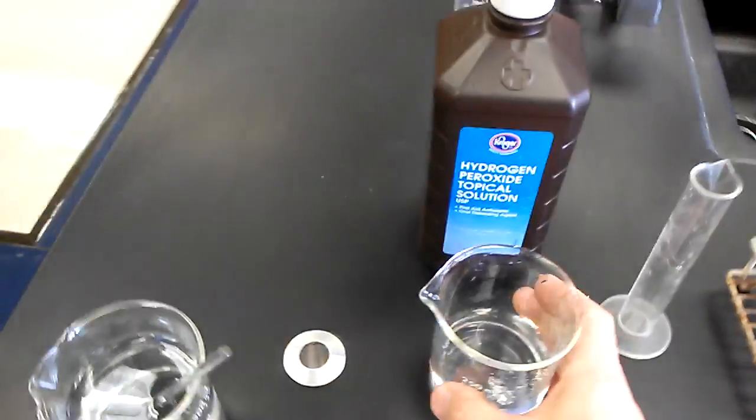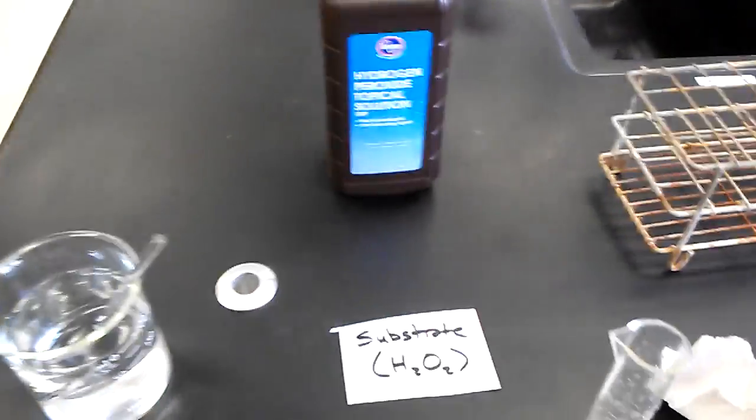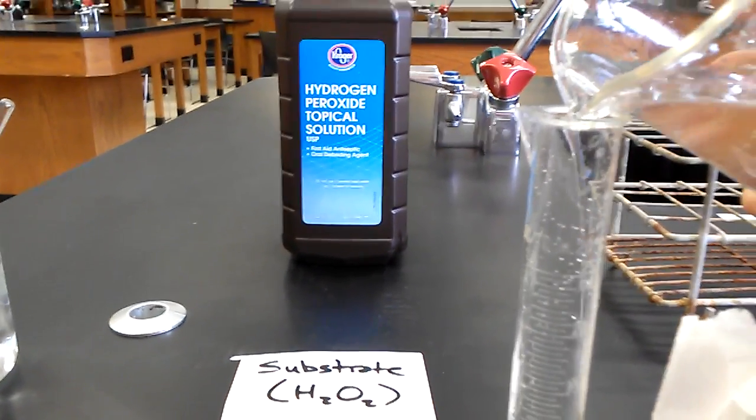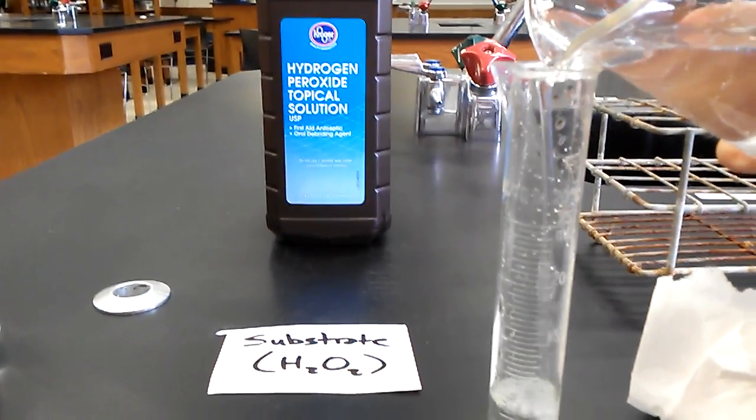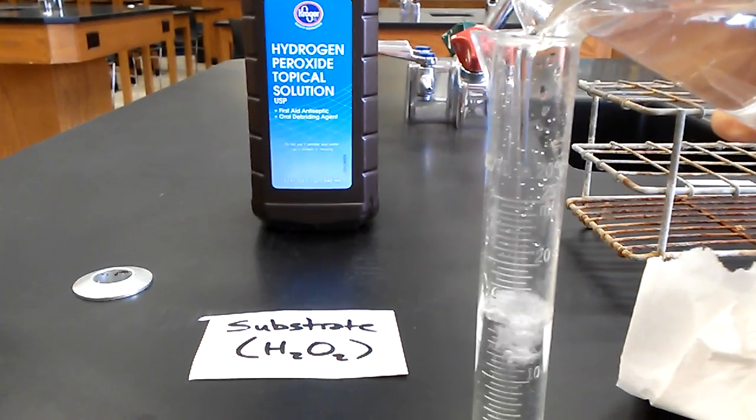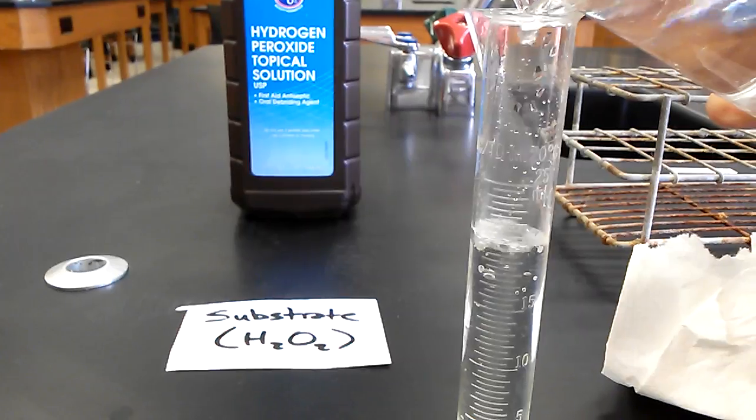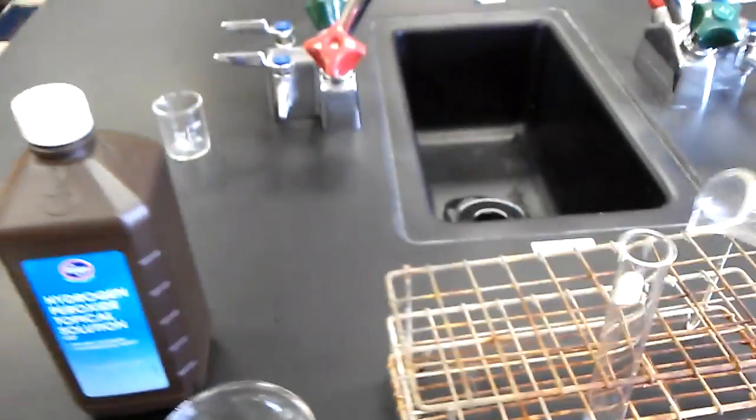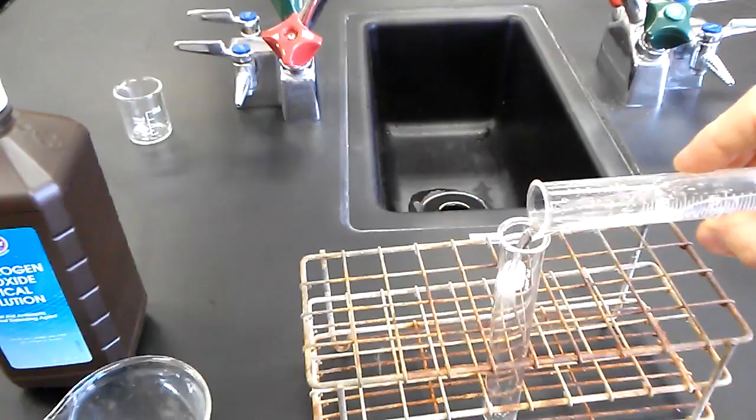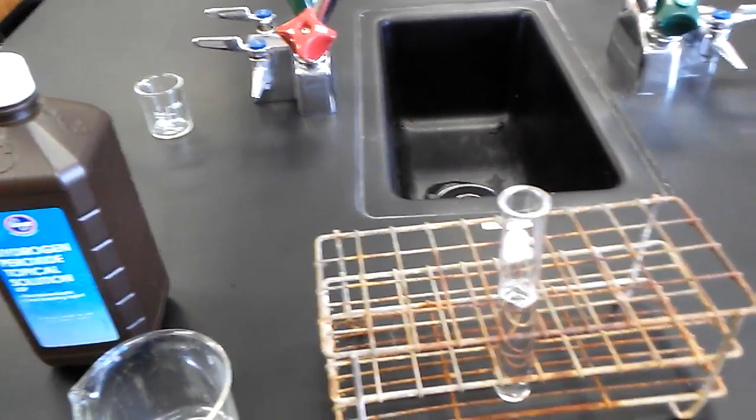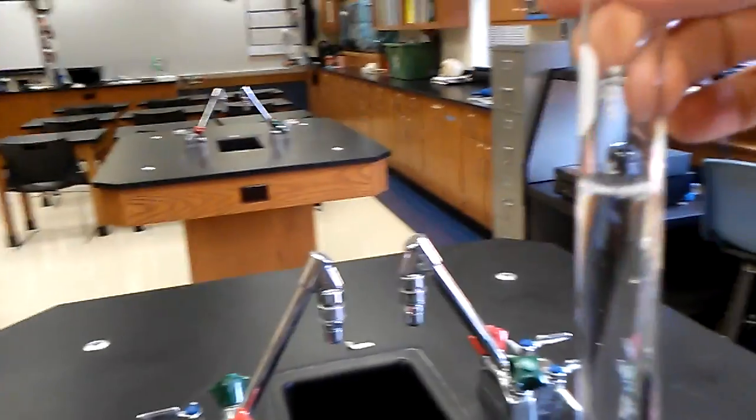So let's pour our hydrogen peroxide. We need 20 milliliters. And this should fill the test tube about two thirds of the way full.